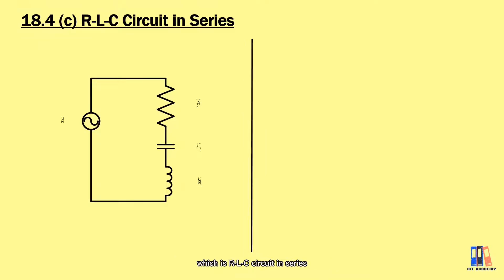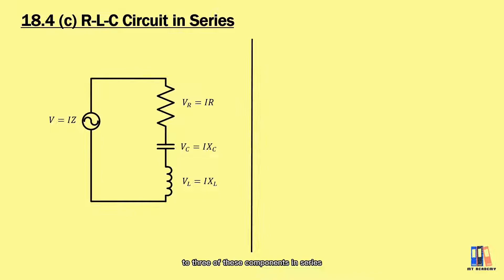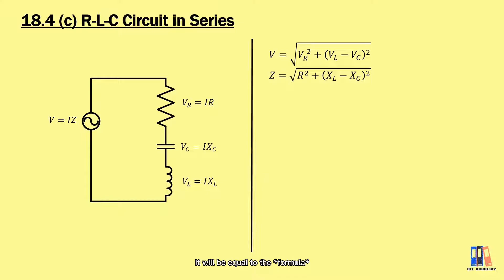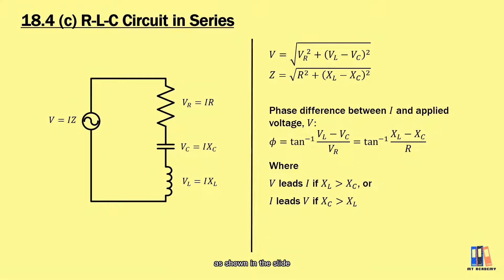Now we move on to the last topic, the RLC circuit in series. It is the combination of what we learned in the RC and RL circuits. From the phasor diagrams of RL and RC circuits, we can see that VL and VC are in opposite directions. To obtain the applied voltage, we apply the formula: V = √(VR² + (VL − VC)²). The impedance is Z = √(R² + (XL − XC)²). The phase difference angle is obtained by trigonometry as shown. Whether voltage or current is leading depends on the relative values of XL and XC.